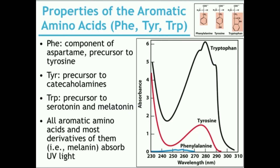Phenylalanine is a component of aspartame. Diet Coke and many diet sodas contain aspartame, which is an artificial sweetener — a dipeptide of aspartate and phenylalanine. Whenever you see on the can 'phenylketonurics, beware,' that refers to phenylketonuria, a disease caused by a deficiency of an enzyme that degrades phenylalanine. Since they can't degrade phenylalanine, levels build up and cause problems, so the law requires anything containing aspartame to carry that warning.